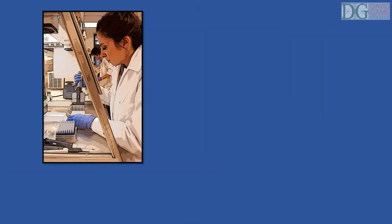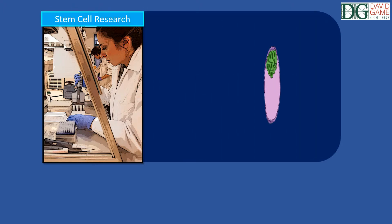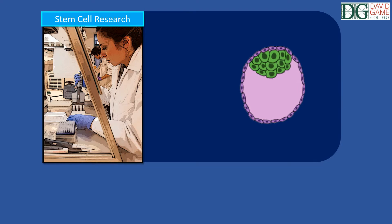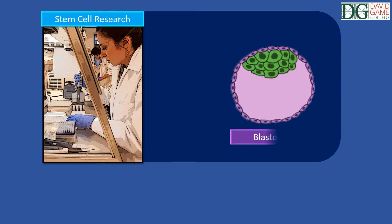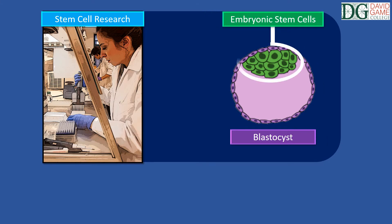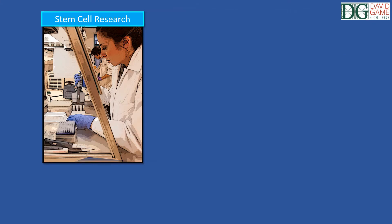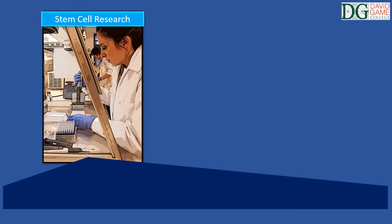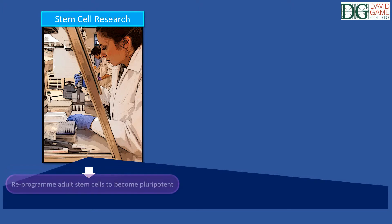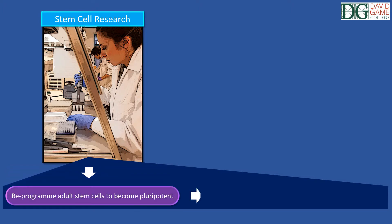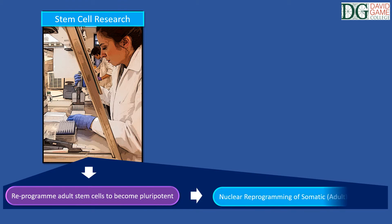A number of studies on embryonic stem cells have been carried out, and research in this area is controversial. A critical question for scientists and society was how to produce pluripotent cells without destroying an embryo. The answer was to take an adult stem cell and alter its pattern of gene expression, in order to reprogram the cell so that it becomes pluripotent and not just multipotent. This research method is called nuclear reprogramming of somatic stem cells.